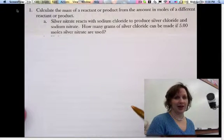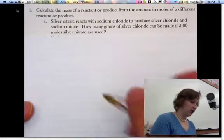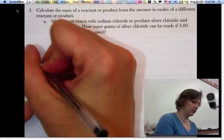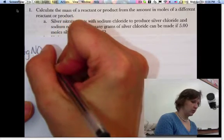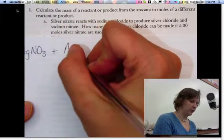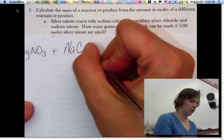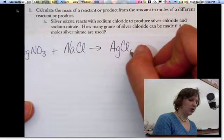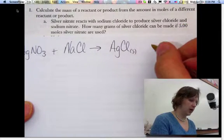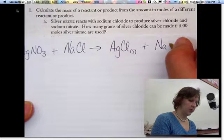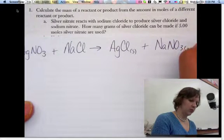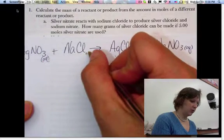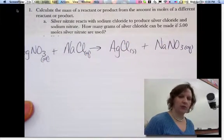First, we have to start with a balanced chemical equation. So let's write out our equation. Silver nitrate reacts with sodium chloride to produce silver chloride. That'll be a solid if you check your solubility rules. And sodium nitrate, which is soluble. And these would be also soluble. Not real important when you're doing stoichiometry problems necessarily.